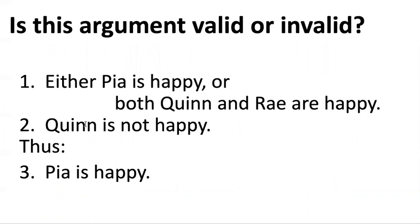Look at premise number two: if Quinn is not happy, then it can't be the case that both Quinn and Ray are happy. So that part can't possibly be true. But if the premise is true, that means Pia has to be happy. Otherwise this 'or' sentence wouldn't be true. So if both of these premises are true, then indeed the conclusion must be true, and that's why this argument is valid.